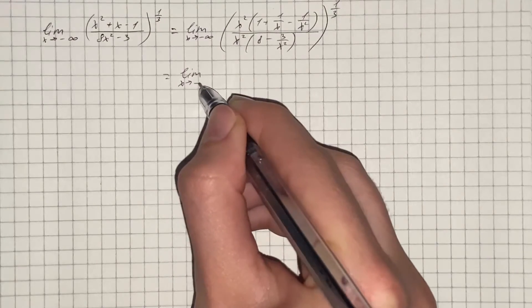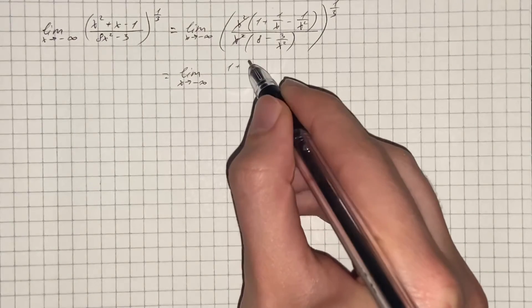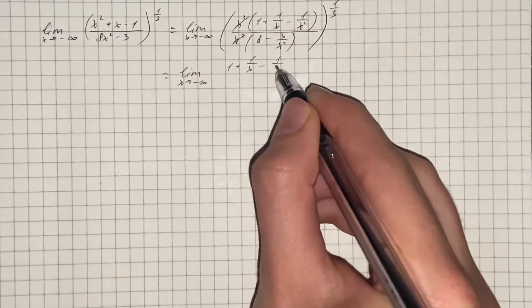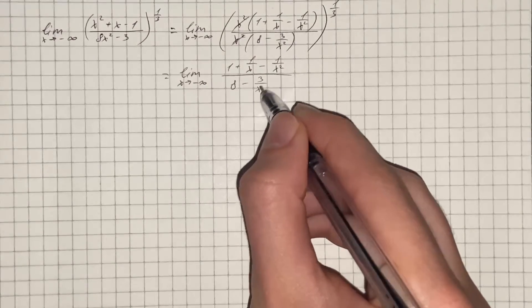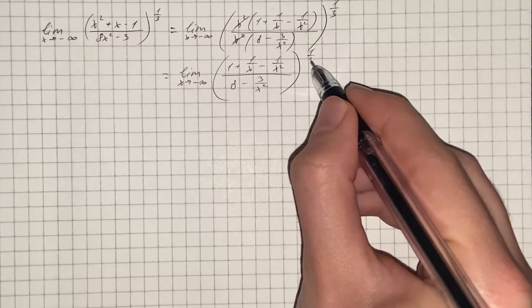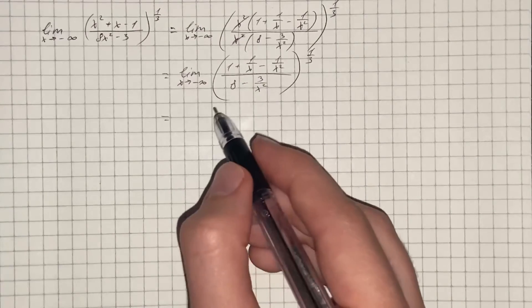Now we can cancel out x squared and we get (1 plus 1 over x minus 1 over x squared) over (8 minus 3 over x squared) to the power of 1/3. Now we substitute x by negative infinity.